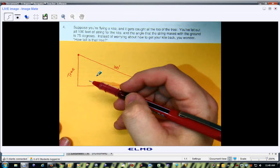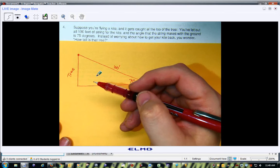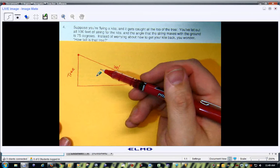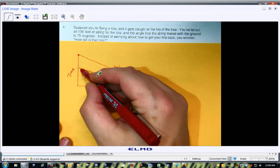And it says, how tall is that tree? Actually, say you're going to climb that tree to get your kite. So I need an x value right there.